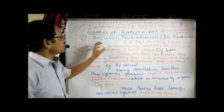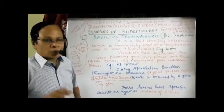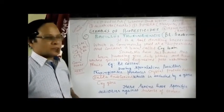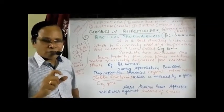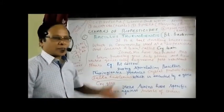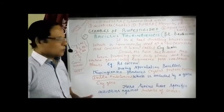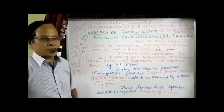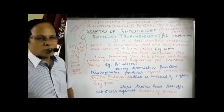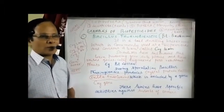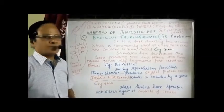Delta endotoxin is highly effective against insects included under these four orders. This is about Bacillus thuringiensis — how far it works, how it kills, particularly the caterpillar. It kills by a specific mechanism. Now let's see the mechanism adopted by the Bt bacterium through its toxin to kill the caterpillar larvae of insects.